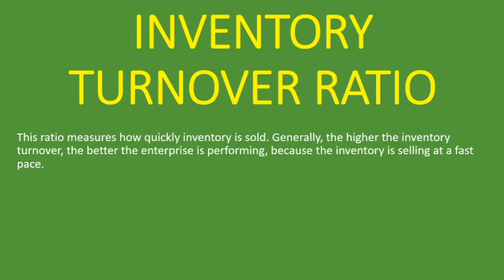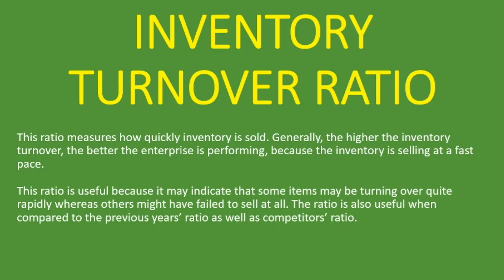This ratio is useful because it may indicate that some items or inventory are turning over quite rapidly whereas others may have failed to sell at all. The ratio is most useful when compared to the previous year's ratio as well as competitors' ratios. On its own it may not mean much, but when compared across years or against competitors, we can see which enterprise is performing better — and generally, the higher it is, the better.